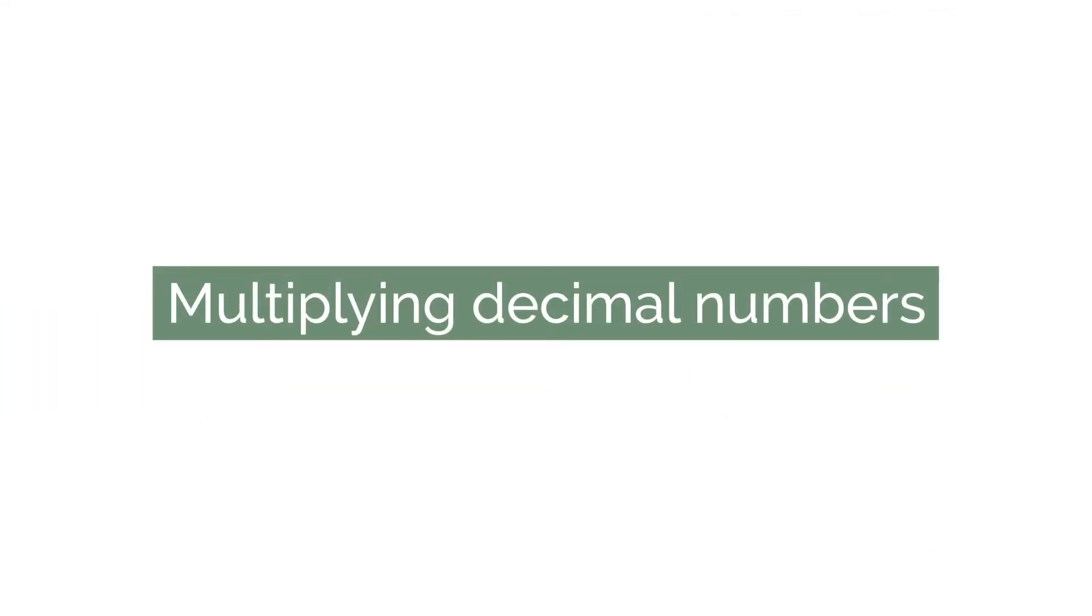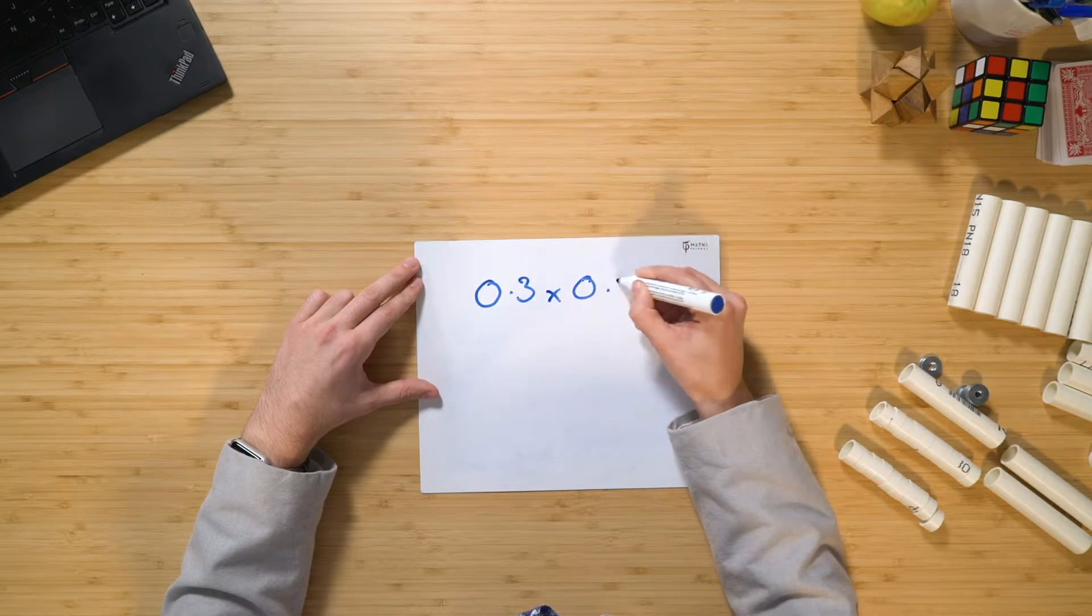Let's have a look now at how to multiply using this model. Now, in this example, we're going to have a look at three tenths times two tenths.